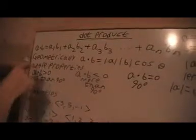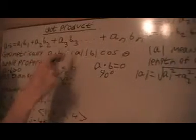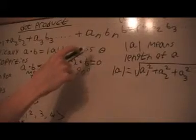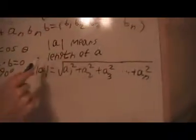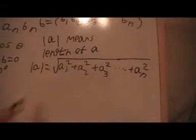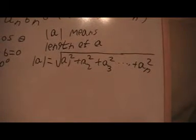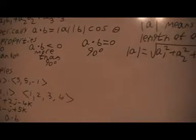Geometrically, a dot b is equal to the length of a times the length of b times cosine of theta. The length of a is equal to the square root of the sum of the squared components. For angle properties: a dot b greater than zero means the angle is less than 90 degrees; less than zero means more than 90 degrees; equal to zero means 90 degrees, which means they're orthogonal or perpendicular.